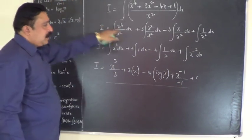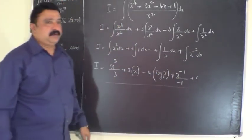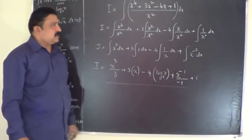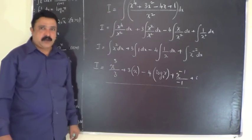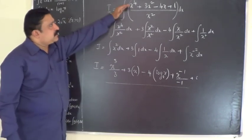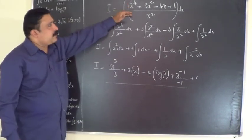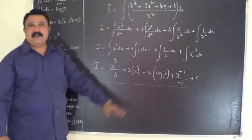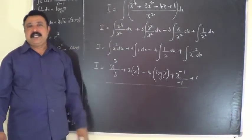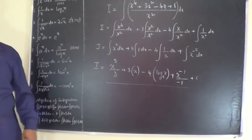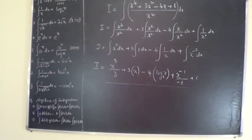You have to add c at the last step of the final answer. Whenever the given function is in the form of numerator by denominator, you have to separate the terms and then integrate.